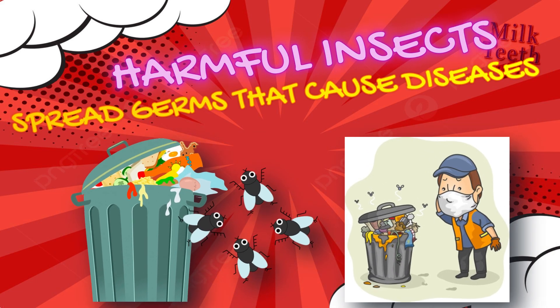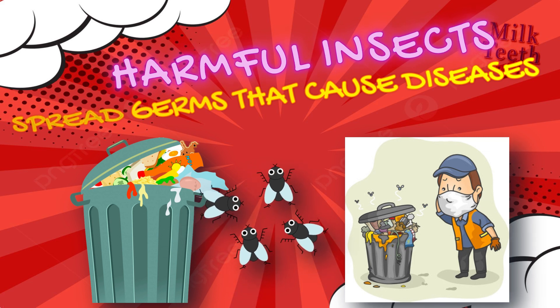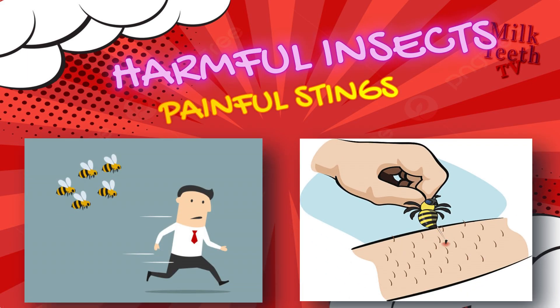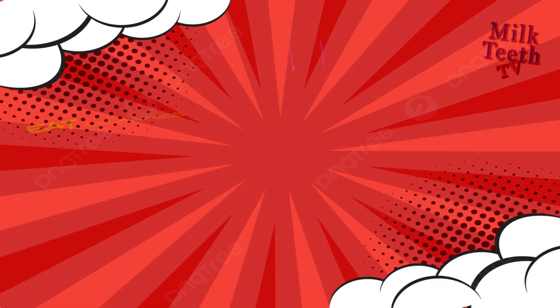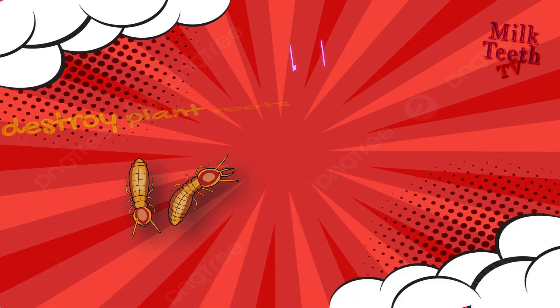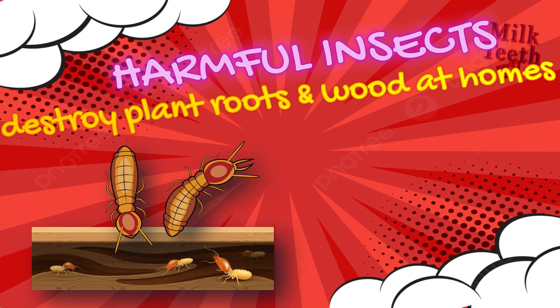Some insects like houseflies spread germs that cause diseases. Some insects like bees give us painful stings. Some insects eat leaves of plants and destroy crops. Insects like termites destroy plant roots and wood in homes.